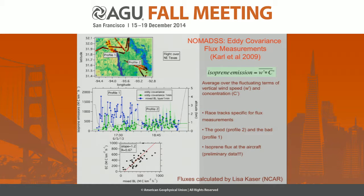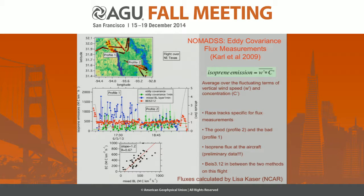I call this the good and the bad. There are two racetracks in the same general area — northeast Texas. For one profile, the two methods agree very well within a few percent, and the correlation shown is excellent. But the other profile in a relatively close area does not agree very well — generally the mixed boundary layer method is higher than the eddy covariance flux measurements. As a tiebreaker, the BEIS emissions calculated earlier lie right in between the two methods.